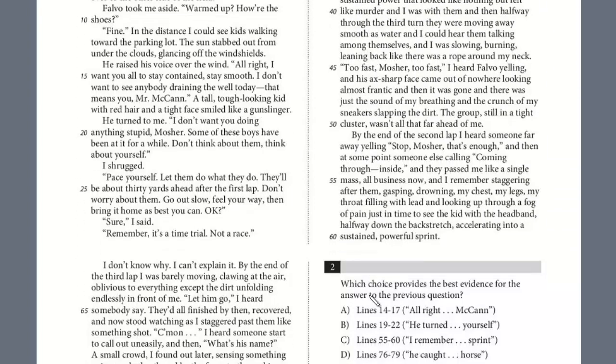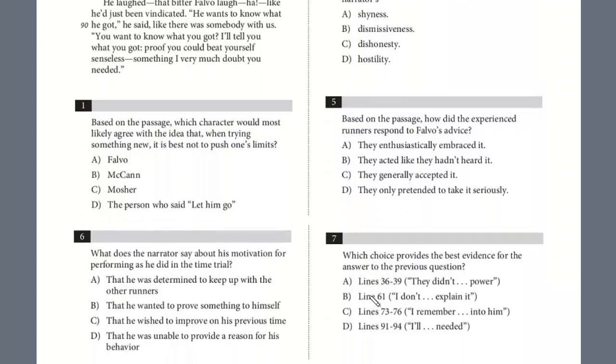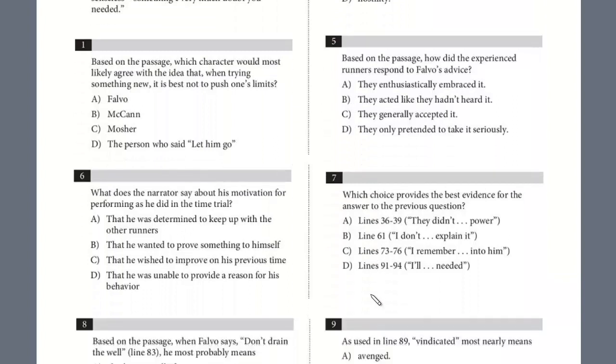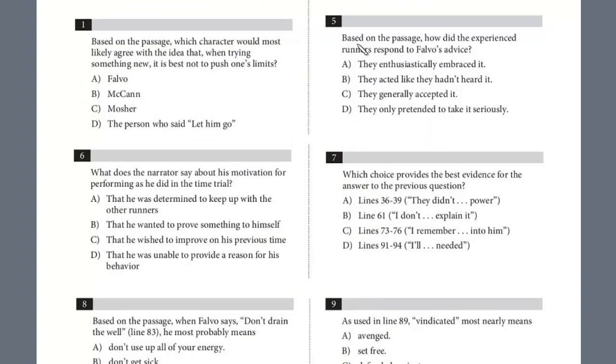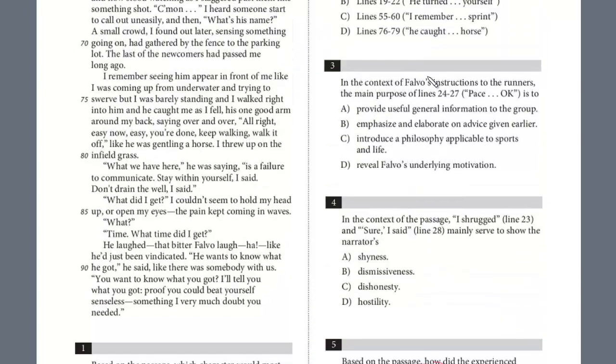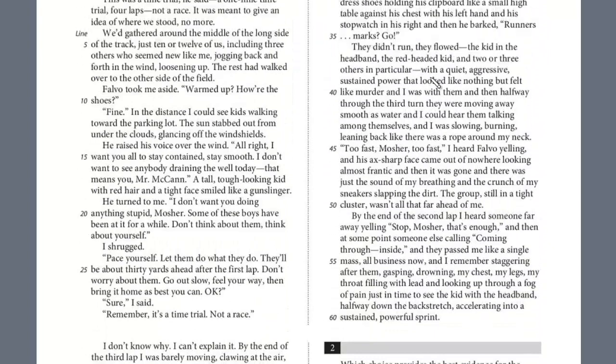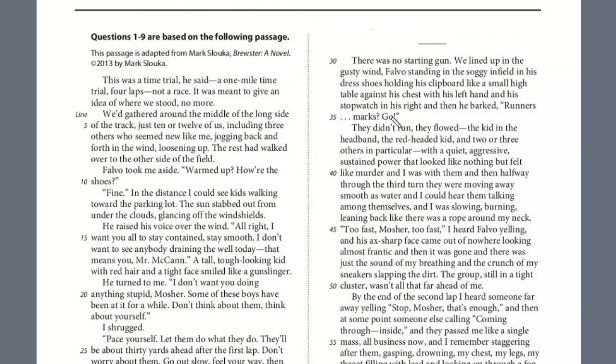So we are on question number five. Let's take a look. Based on the passage, how did the experienced runners respond to Falvo's advice? We know that Falvo was the coach. He gave advice to the group and also specifically to Mosier. He warned Mosier twice not to overdo it. But the advice he gave to the group, let's take a look. That is in the beginning, obviously before the race started. Around line 14, Falvo says...